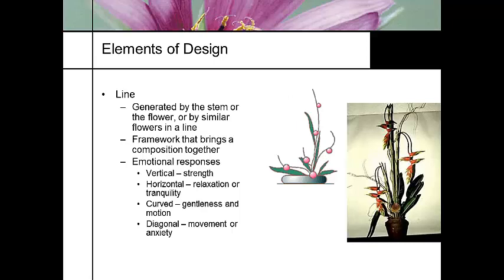Some of the emotional responses you can use in design: vertical lines emphasize strength — strength of character and strength in your arrangement. Horizontal brings out an emotion of more tranquility and relaxation. Curves suggest gentle motion. And diagonal is anxious — it generates anxiety. You can use these in any kind of design perspective that you're working on.